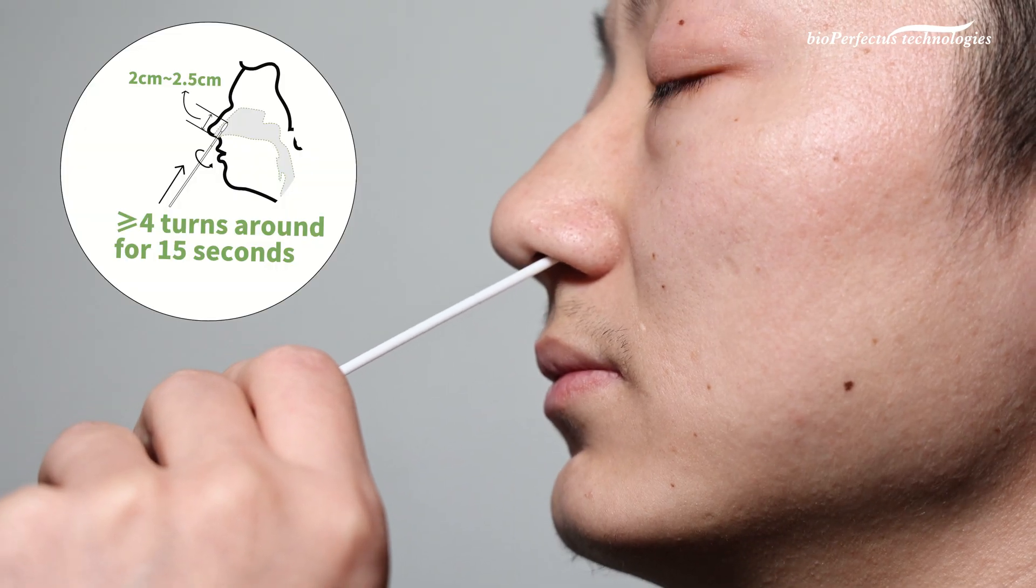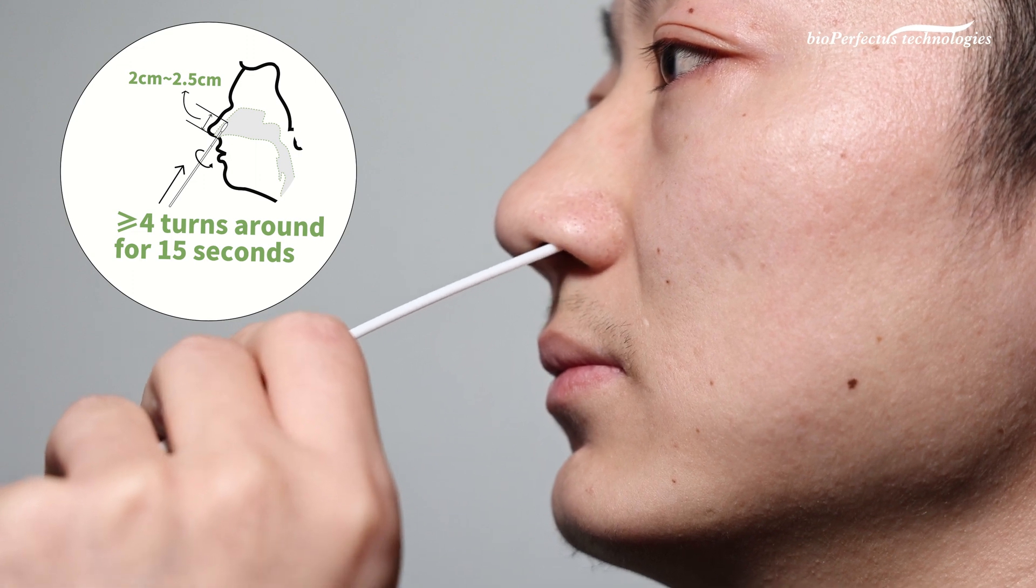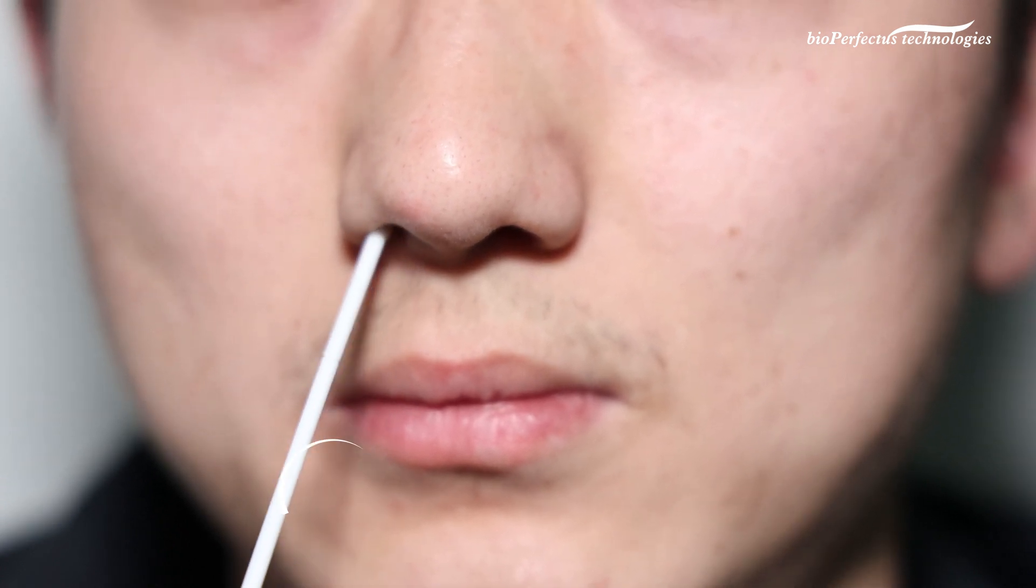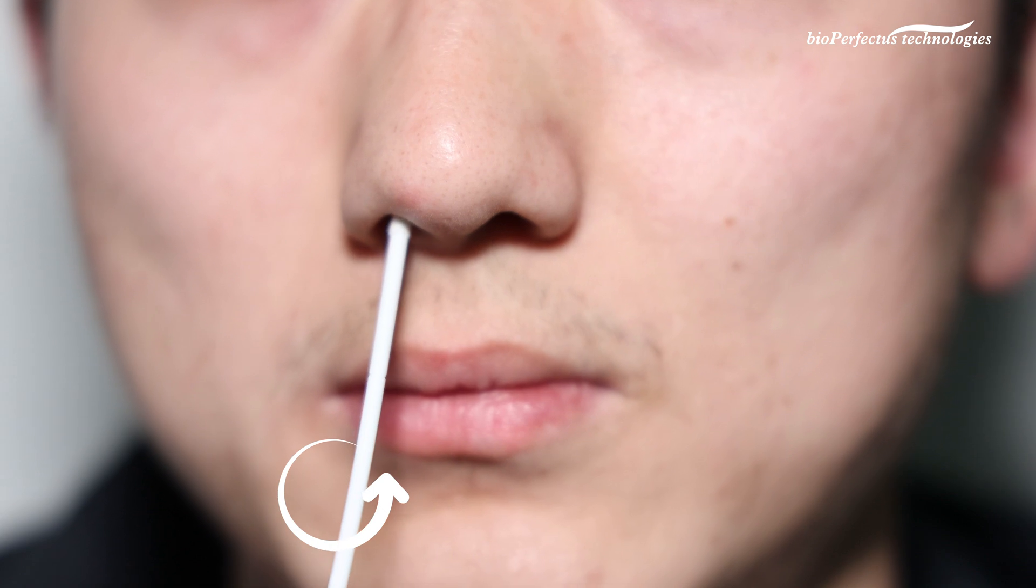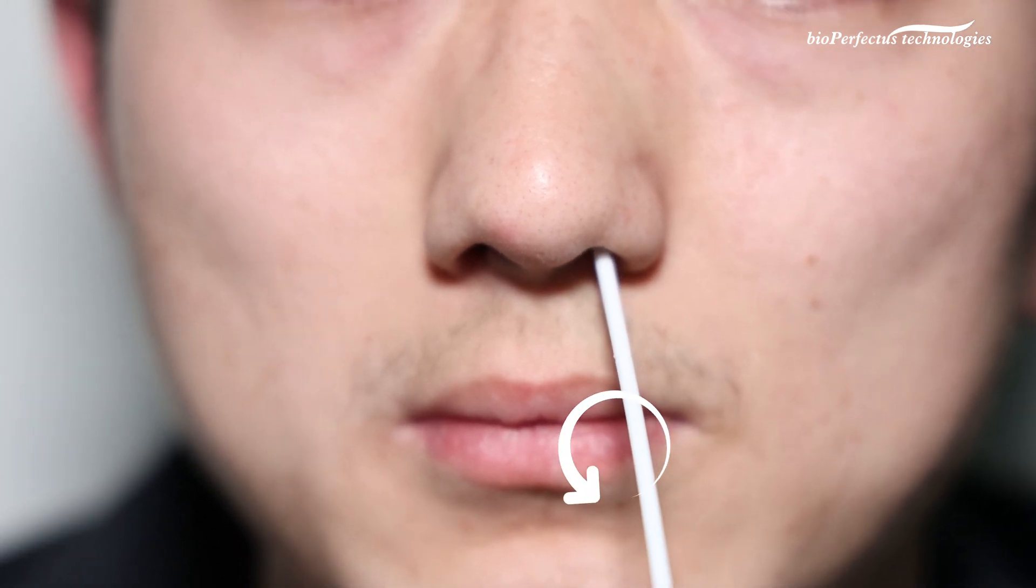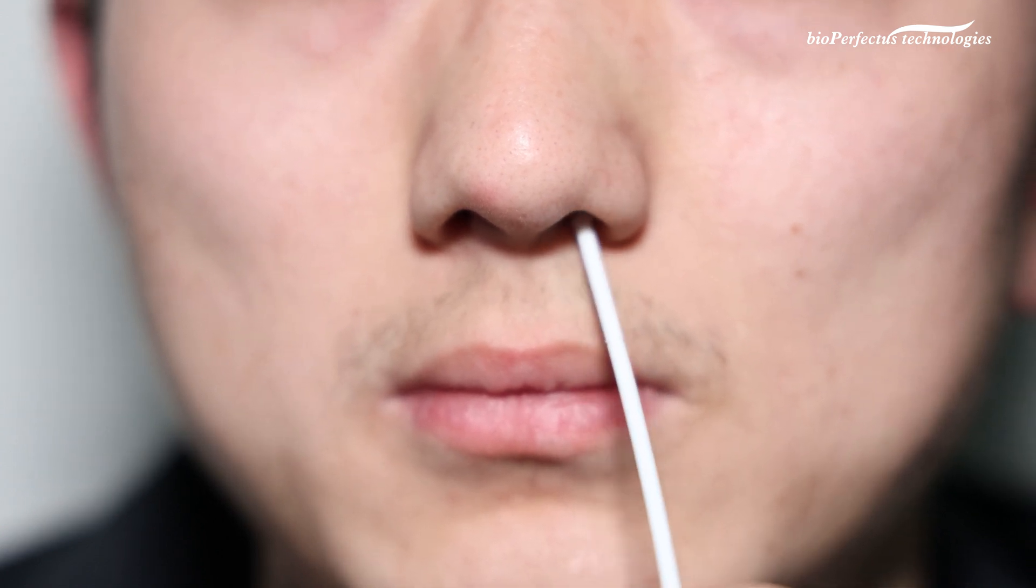Slowly insert the entire swab head into one nostril until you meet resistance, usually it is 2 to 2.5 centimeters depth, depending on the size of the person's nose. Rotate the swab at least four turns for at least 15 seconds around the inside walls of your nostril. Repeat the steps in another nostril. Remove the swab gently after finishing the collection.